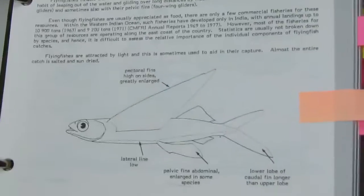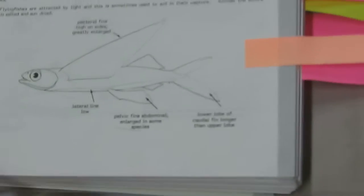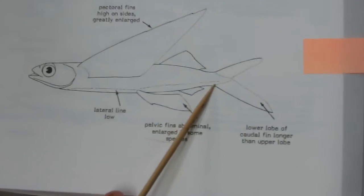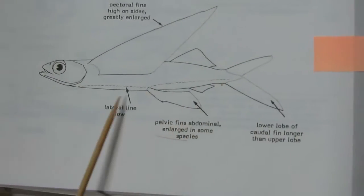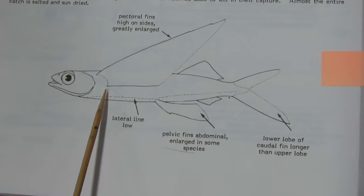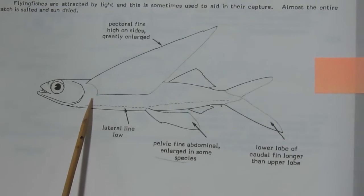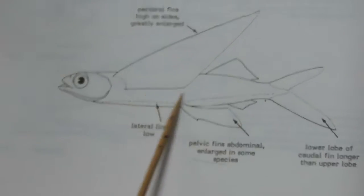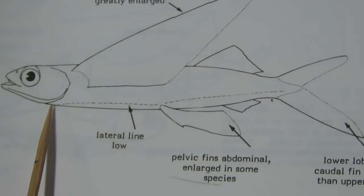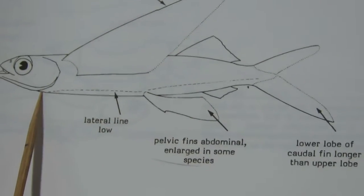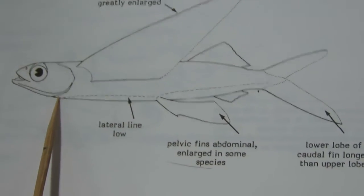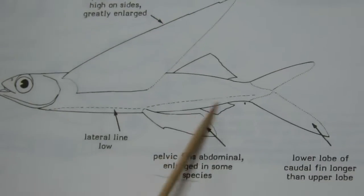Next is Exocoetidae — the flying fish. The lateral line is low on the body. In Belonidae also the lateral line is low on the body, but in Belonidae it starts below the pectoral fin, while here it starts from the lower side near the upper curve.